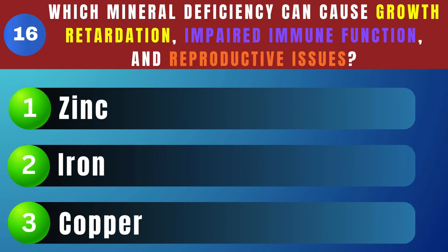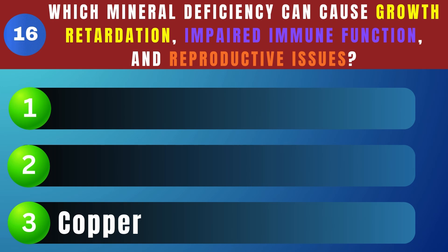Which mineral deficiency can cause growth retardation, impaired immune function, and reproductive issues? Copper.